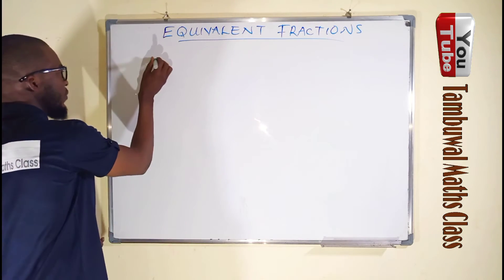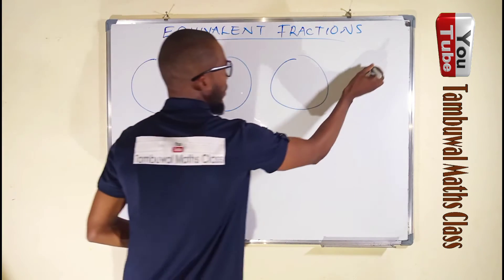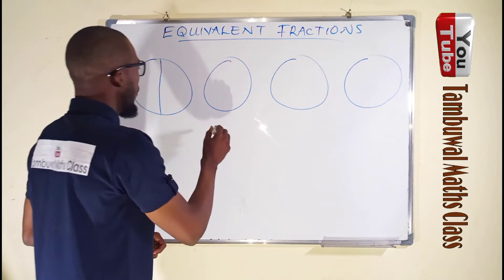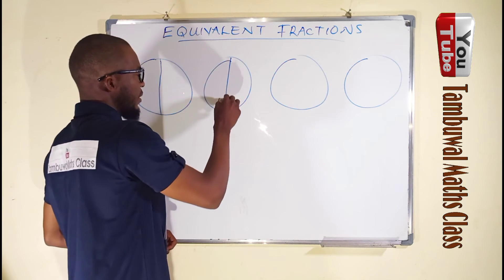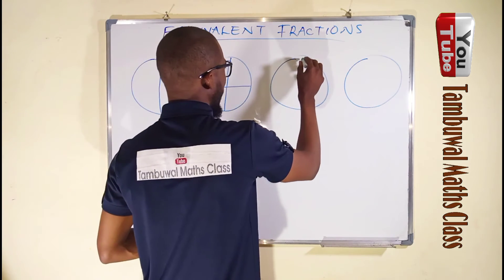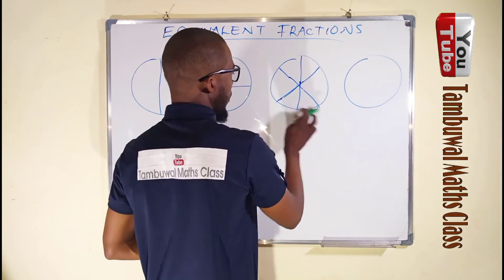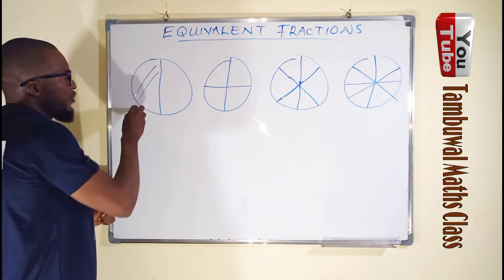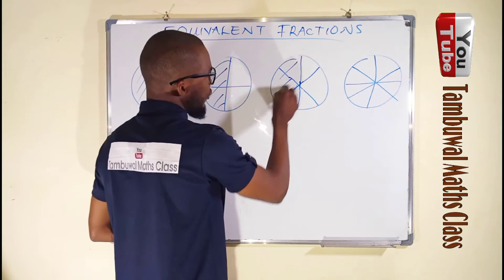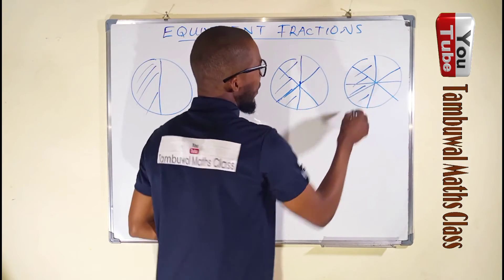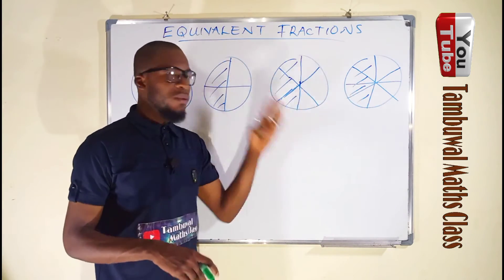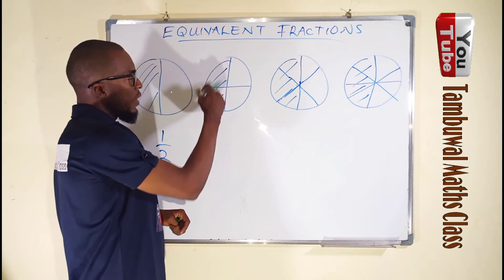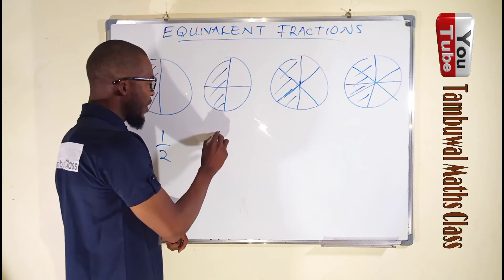Let us consider four circles. We have one, two, three, and four. Let us divide the first one into two parts, the second one into four parts, the third one into six parts, and the fourth one into eight parts. Now let us shade portions of each circle. If we represent the shaded parts as fractions, this first one is just one out of two — so we have one over two.